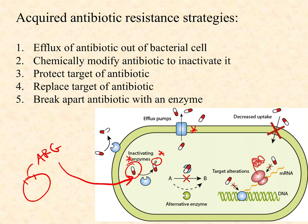Number three is protecting the target. A protein is produced that binds to, in this case, a ribosome, so that the antibiotic can no longer bind to the ribosome. Importantly, the protection protein itself does not impact the ribosome's function — the ribosome can still do its job. So we protect the antibiotic's target by producing a protein that binds to it, such as the ribosome, meaning the ribosome still works but the antibiotic can no longer interact with it.